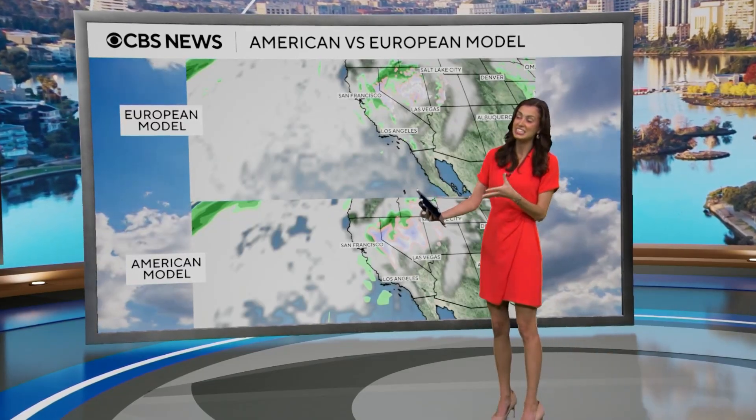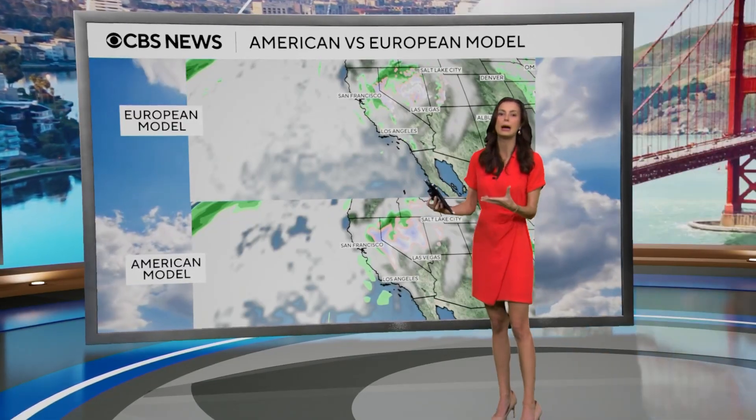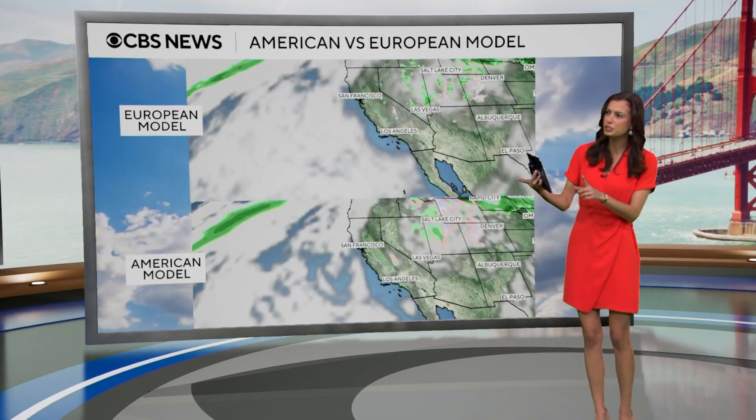The American model is what I like to consider 'blobby.' It shows you a rough outline of where the best chance for snow and rain is, but it doesn't show you in detail the peaks of the mountains or that exact detail of the snow versus rain boundary, which is really important for us meteorologists when it comes to forecasting the weather.